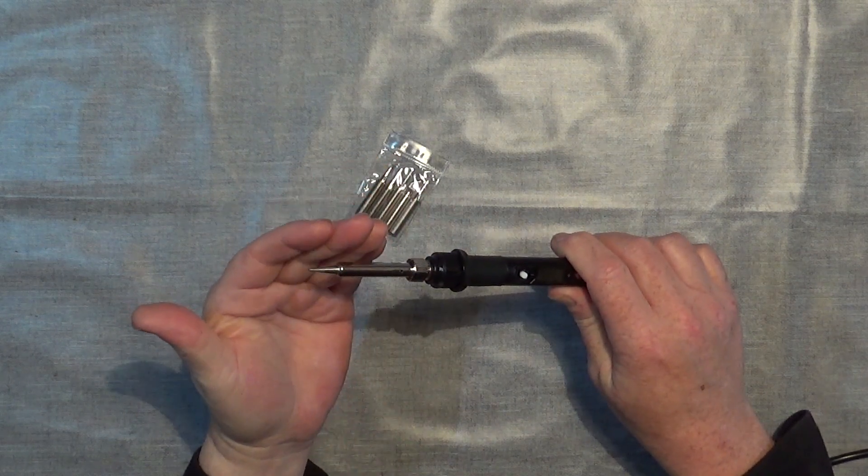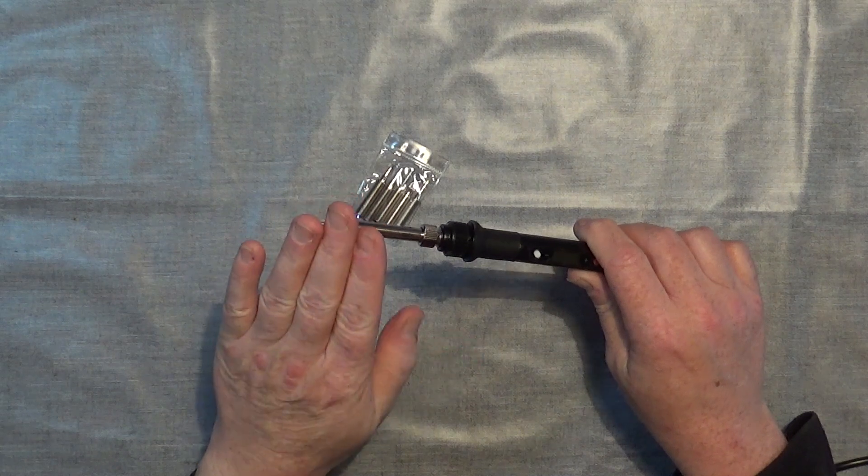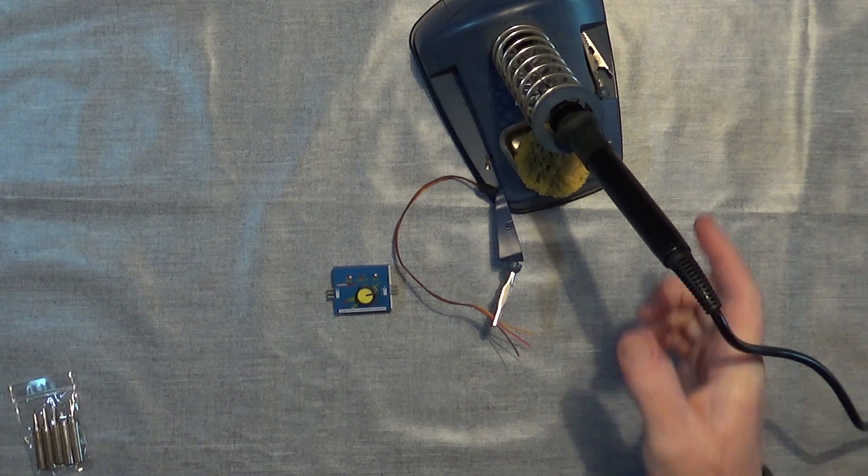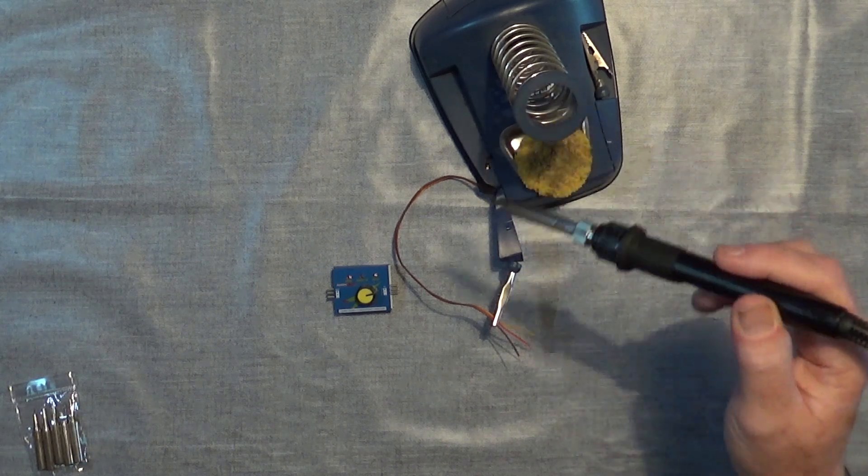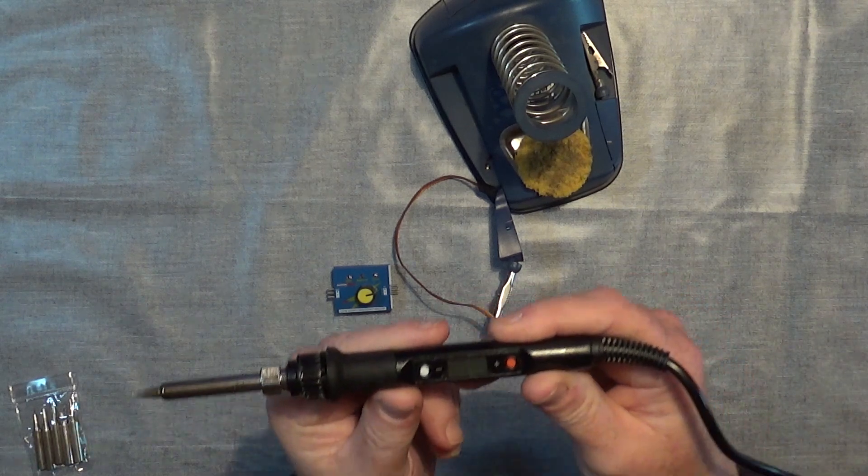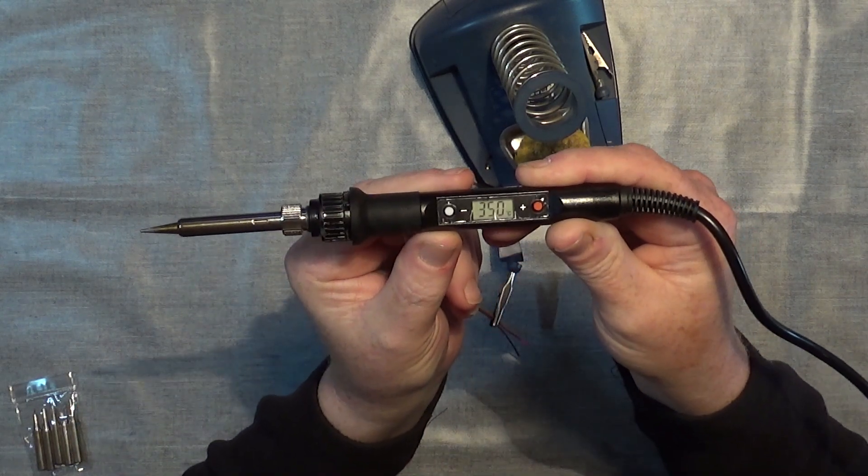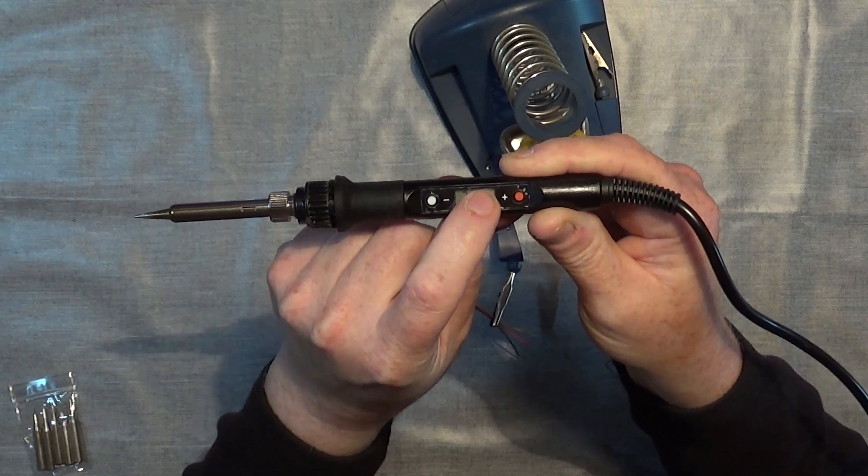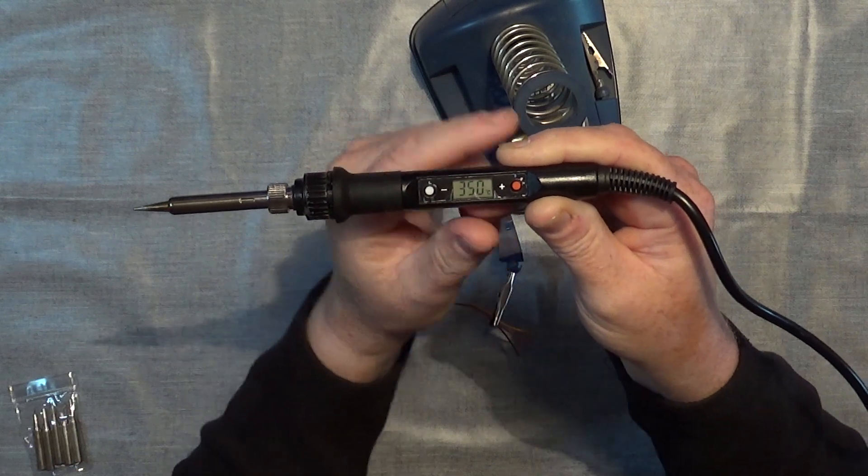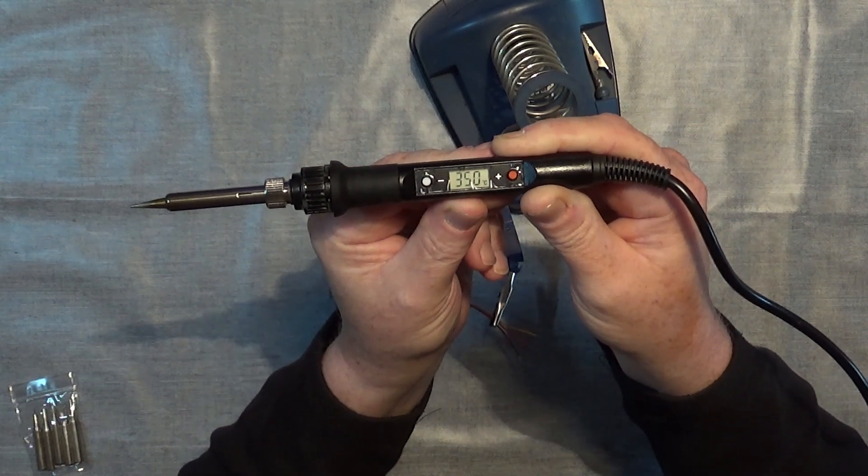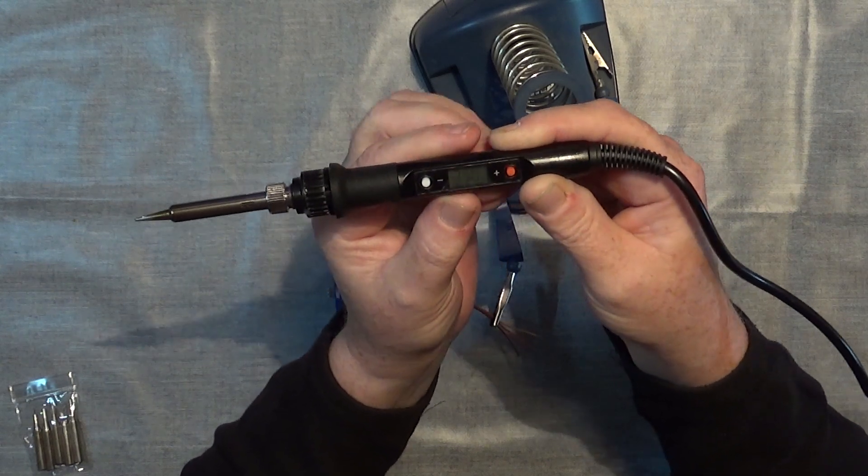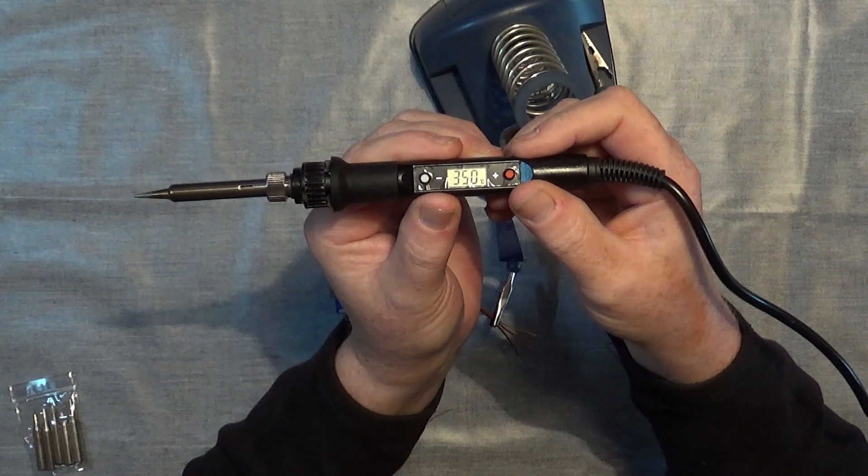So yeah, I can feel it getting warm. Okay, so it's been on for a bit and I'll turn it down to 350 for the minute. And what I have discovered is in this top right hand corner here there's a little icon that flashes until it's got to temperature. So now it's not flashing, it's at temperature.